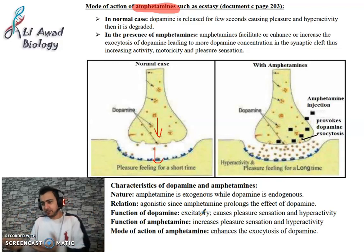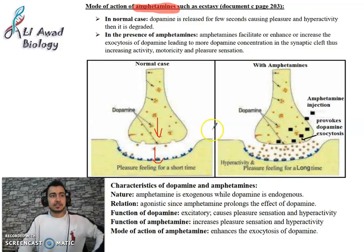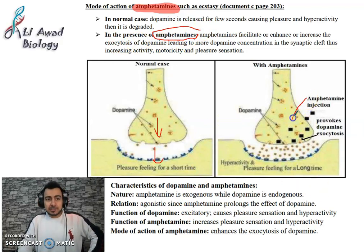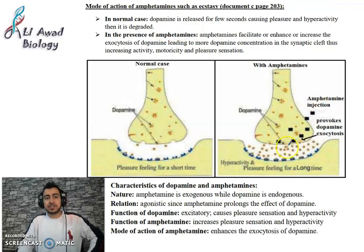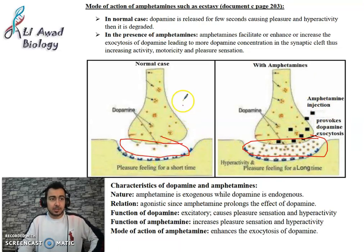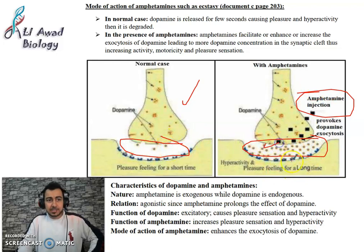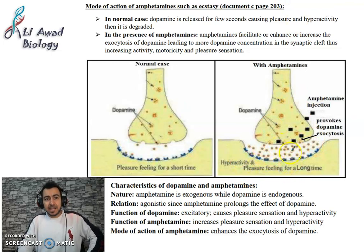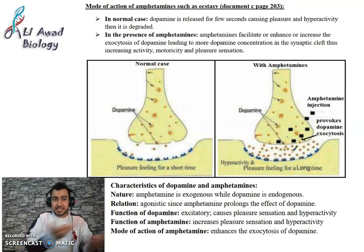In normal conditions this activity doesn't last long — the person rests after a while. What happens in the presence of amphetamines? Amphetamines stimulate dopamine and say 'increase your exocytosis.' Amphetamines increase the exocytosis of dopamine. In the synaptic cleft, the concentration of dopamine becomes very very high compared to the normal case.